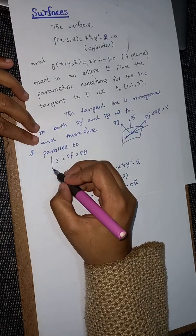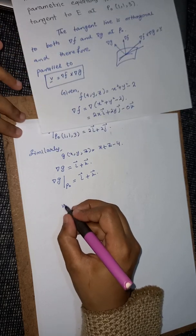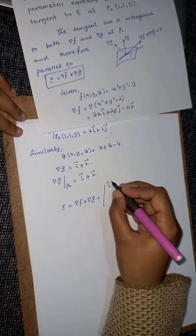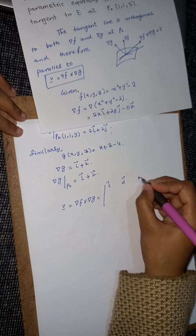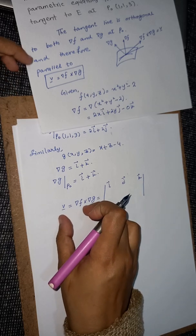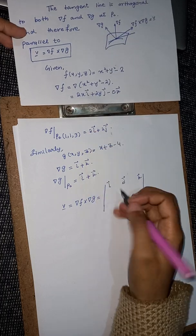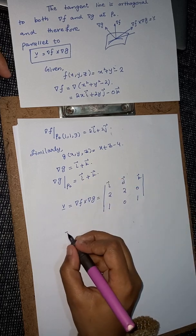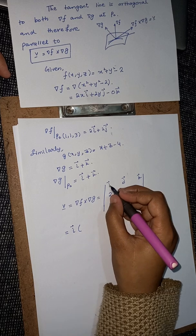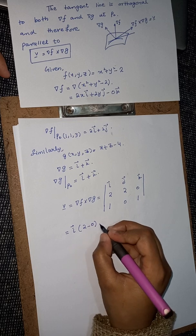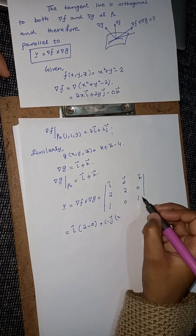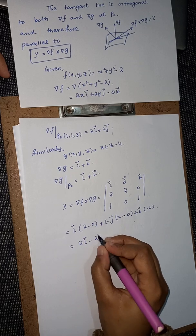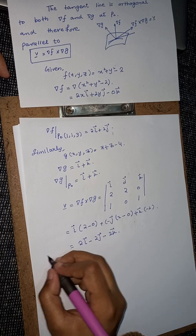Now we have to find our V vector: V = ∇f × ∇g. We use the determinant method — writing i, j, k in the first row; the values of ∇f as 2, 2, 0 in the second row; and the values of ∇g as 1, 0, 1 in the third row. Opening the determinant: i(2·1 − 0) − j(2·1 − 0) + k(0·0 − 2·1), which gives 2i − 2j − 2k. This is our V vector.